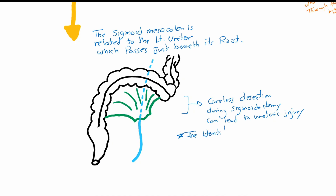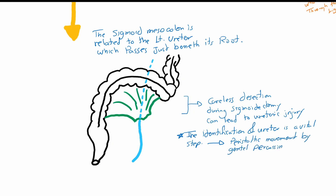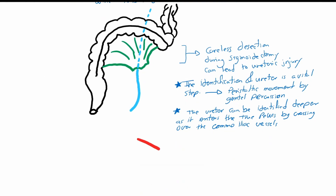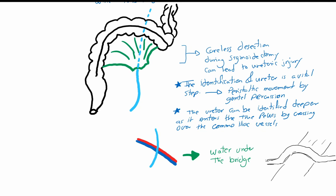By careful dissection, the left ureter can be seen as a white structure which reacts to light percussion with peristaltic movement. Another site where the ureter can be demonstrated is when it enters the true pelvis, crossing over the iliac vessels — commonly known as 'water under the bridge,' where the water is the iliac vessel and the bridge is the ureter.